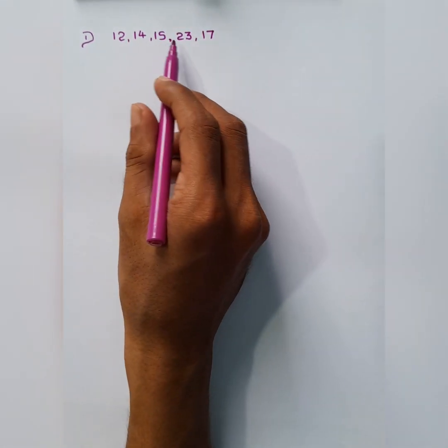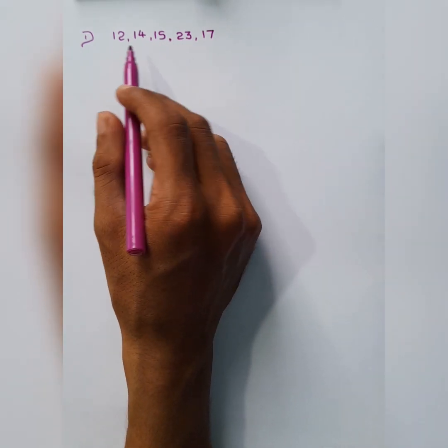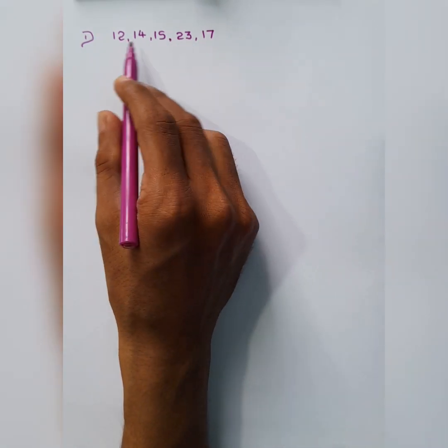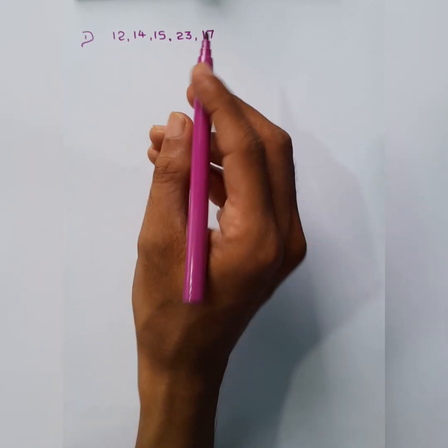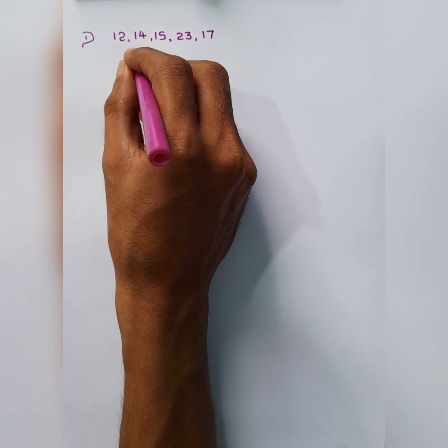If they ask us to find MEAN by using these data, what we have to do first? First of all we have to add them all.